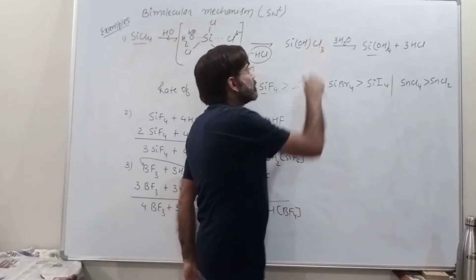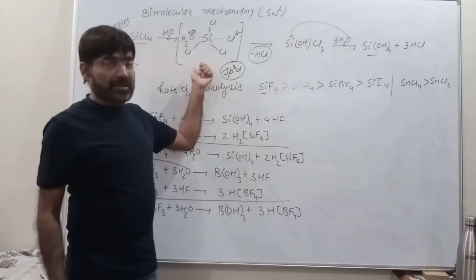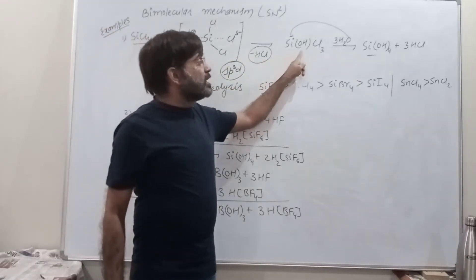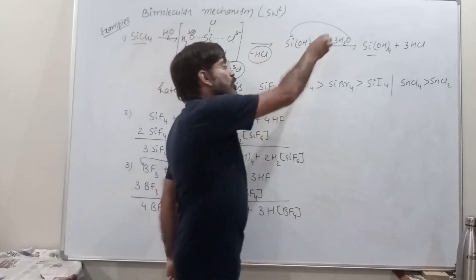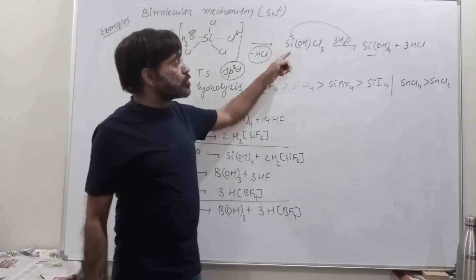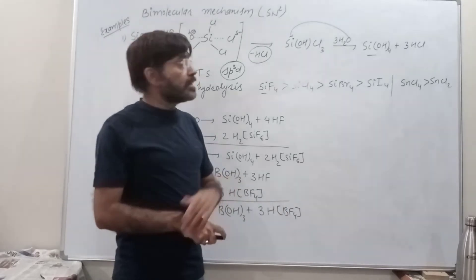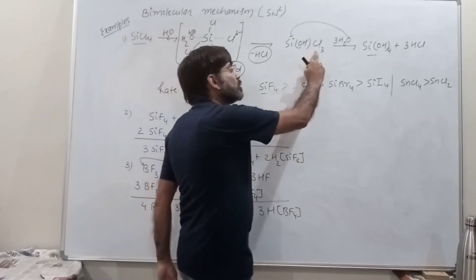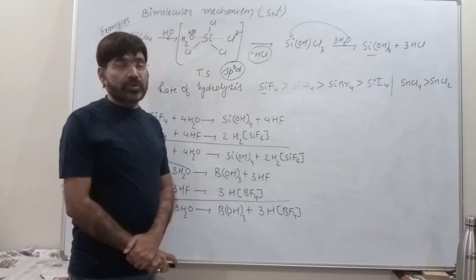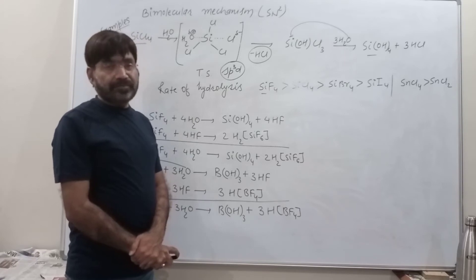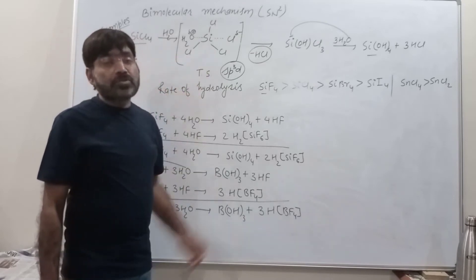One by one, all the remaining chlorine atoms are also removed from silicon and replaced by OH from water through the same mechanism. Since three chlorine atoms are still connected to silicon, silicon remains electron-deficient. Water as a nucleophile repeatedly attacks silicon until all chlorine atoms are removed. The final hydrolysis product of SiCl4 is Si(OH)4 and 4HCl. This is the bimolecular mechanism for hydrolysis of SiCl4.